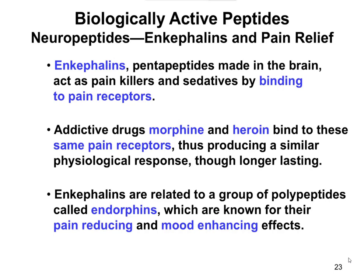Drugs like morphine and heroin are addictive drugs that bind to those same pain receptors. They produce a similar physiologic response in terms of blocking the pain, and they have a much longer-lasting effect. That's one of the reasons why a lot of people become addicted to these drugs. People don't feel pain — it takes them away from any kind of pain they might be feeling, both physical and psychological. However, those addictive drugs have a lot of other negative side effects and consequences beyond just being very addictive, so that's why we try to stay away from those.